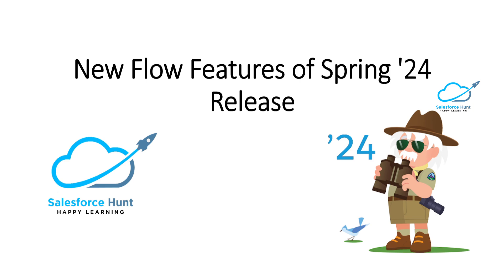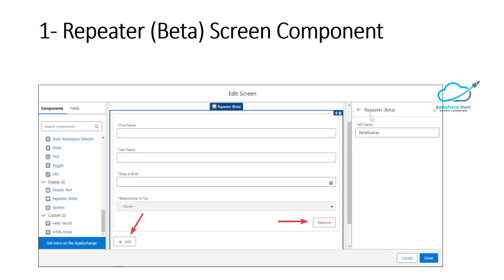Let's get started without any further delay. Here you can see the logo of the Spring '24 release. The first feature is the Repeater beta screen component — still in beta, but we can use this Repeater to use multiple components in a single screen. Add a set of components to a screen and enable your users to duplicate that set of components at run time with the new Repeater component.